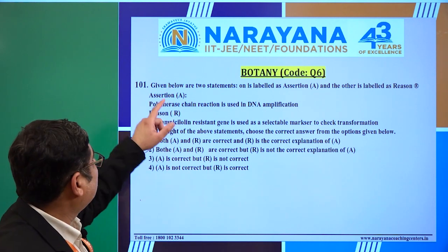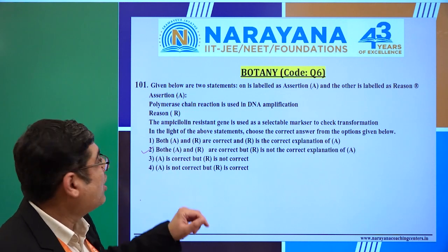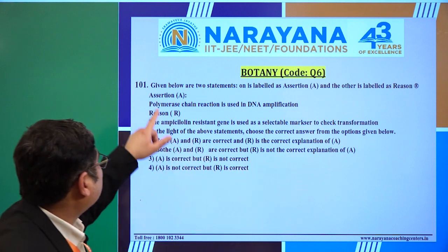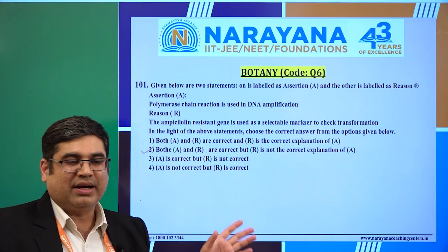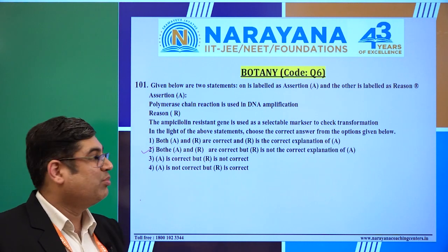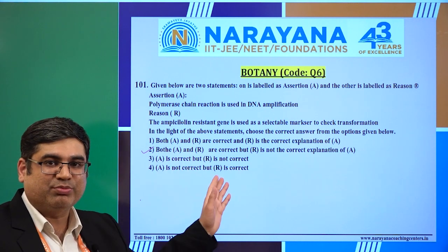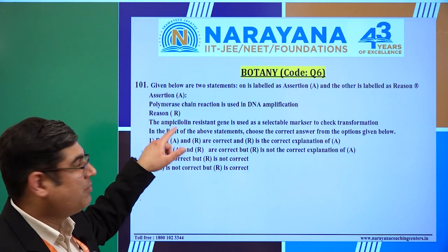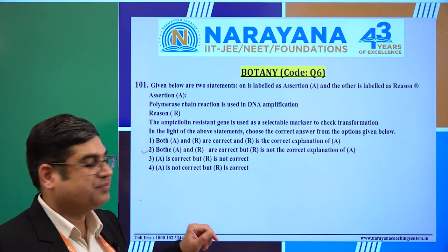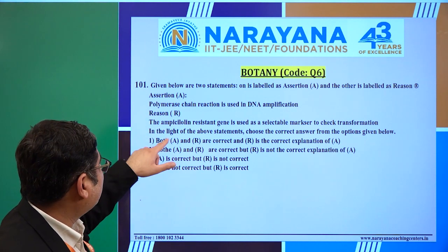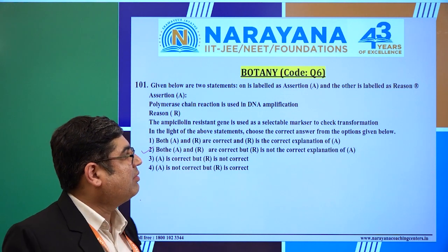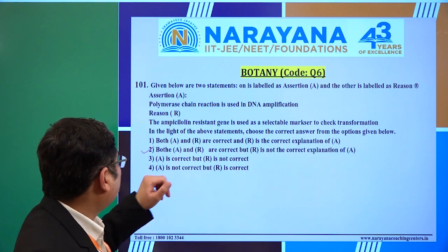The question given below has two statements: one is labelled as Assertion (A) and the other is labelled as Reason (R). These types of questions were earlier being asked in AIIMS, but now it is given as the very first question in this paper code. The assertion is: Polymerase Chain Reaction (PCR) is used in DNA amplification. The reason given is: the ampicillin-resistant gene is used as a selectable marker to check transformation.